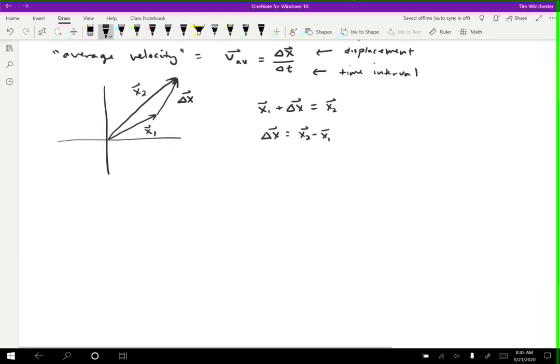So the average velocity gives us some information about the overall motion. But when we talk about how fast something's going, we usually want to know how fast it's going in a really short period of time. So the information that you get when you look at the speedometer in your car. So in that case, what we want is instantaneous velocity.